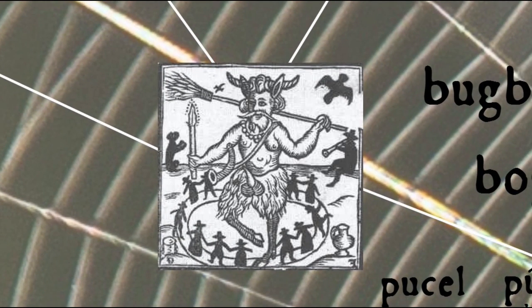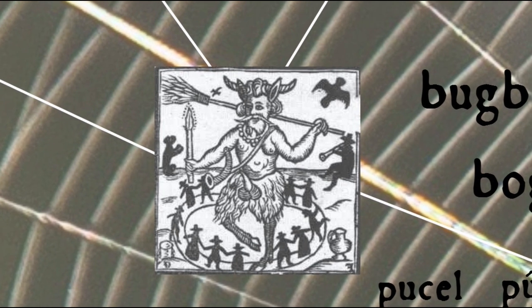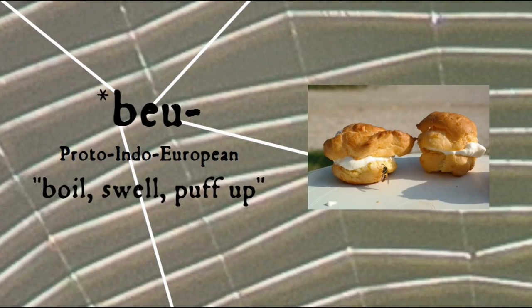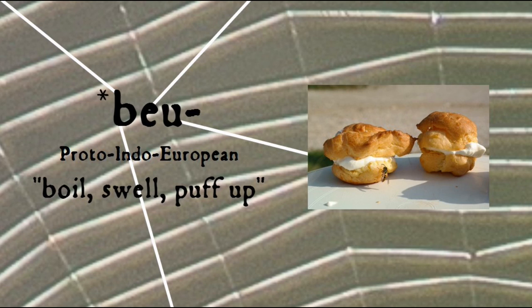As to where this Middle English bug comes from, one possibility is that this supernatural creature was once some kind of goat-like being, not uncommon in many folklores, and thus the word comes from the same Indo-European root that gives us the word buck. Alternatively, bug may come from an Indo-European root that means to boil, swell, or puff up, which lies behind many other English words, not only boil and puff, but also big, pock, and booger.